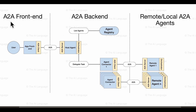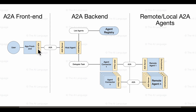This is our entire architecture that we are going to use to build our multi-agent A2A setup. It's going to consist of a front end first — this is where the user will interact with your system or app. The app front end will host an A2A client, and this A2A client is going to be our entry point into our A2A backend and all the other remote or local A2A agents that we are going to use.